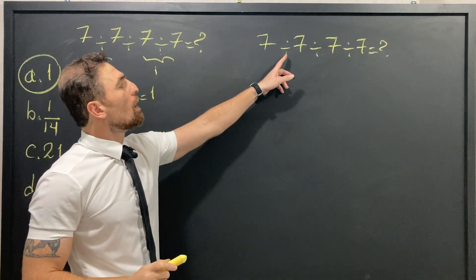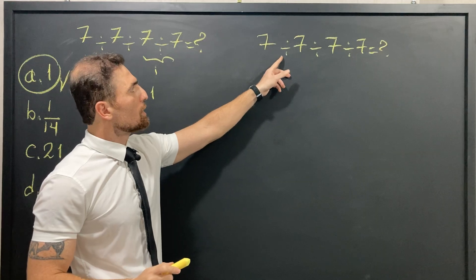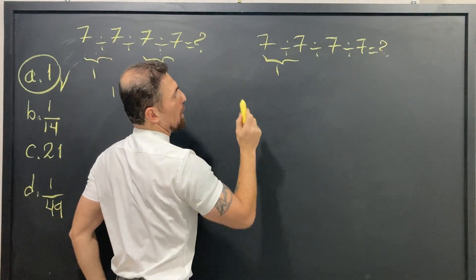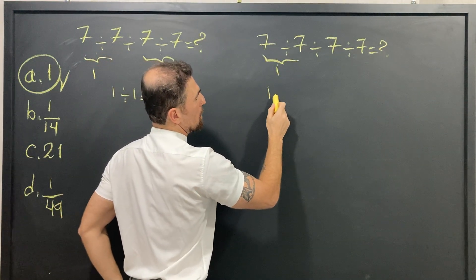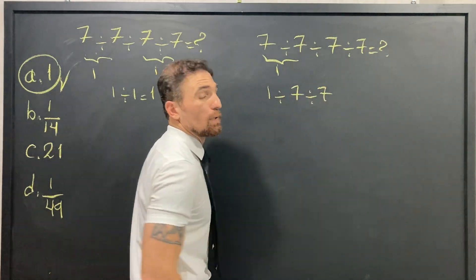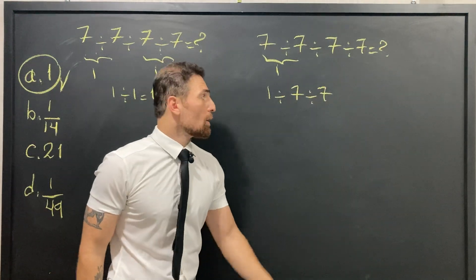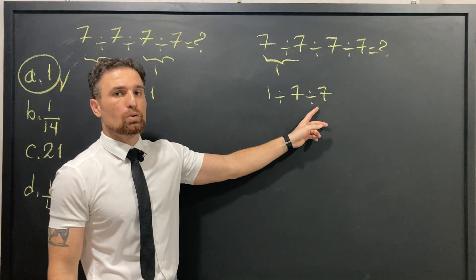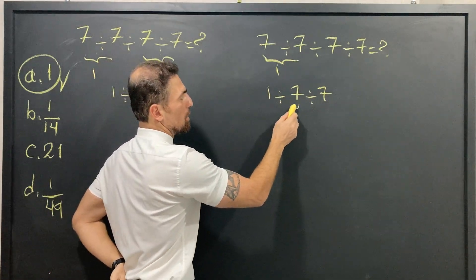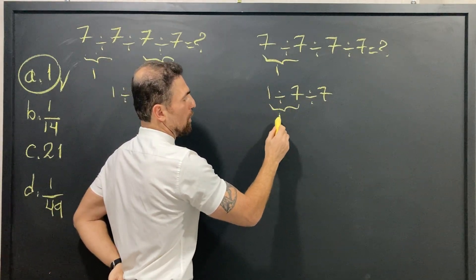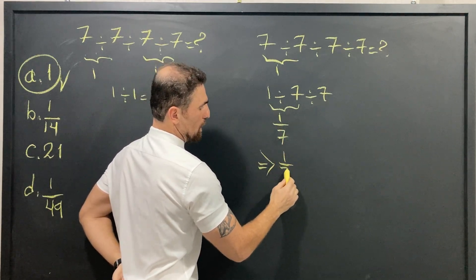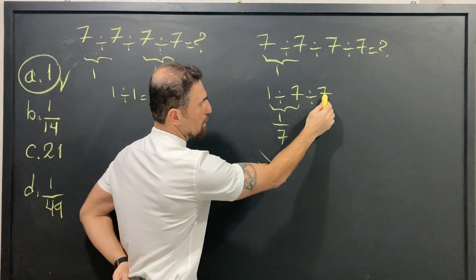As the order of operations says, we start from the left: 7 ÷ 7 = 1. So it becomes 1 ÷ 7 ÷ 7. We again have more than one division, so we start from the left: 1 ÷ 7 = 1/7.